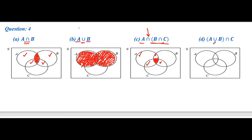Now come to this part. First we have to identify A union B as a whole. A union B means the region of A, the region of B, and the region common between A and B as well.